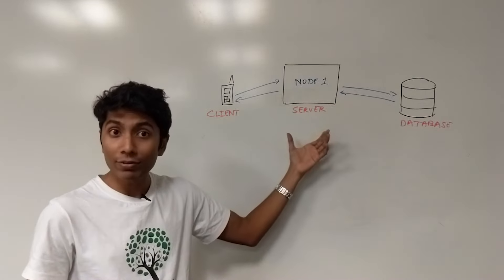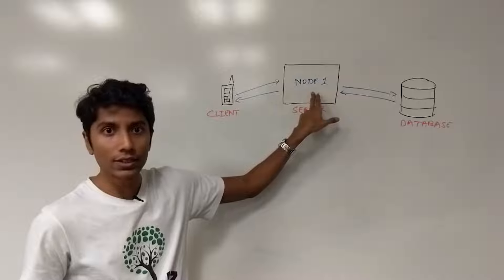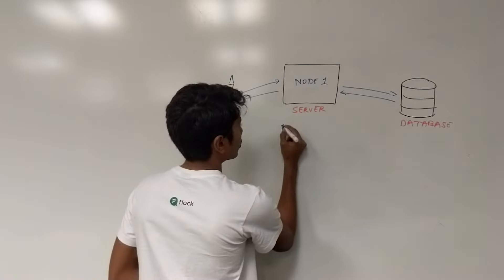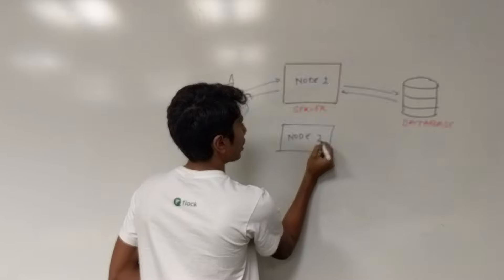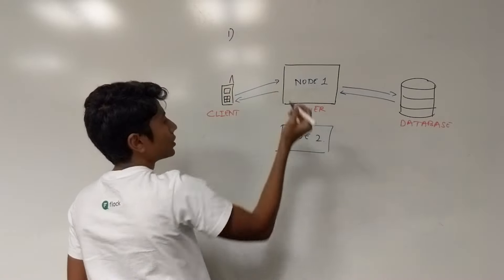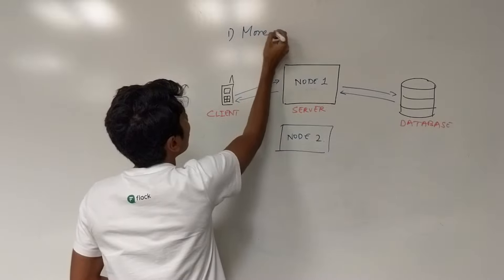In general, as for the server, if this node fails, then our entire service fails. So to take care of that, you can add another node, node 2. And that's the first way of reducing your points of failure. That is more nodes.